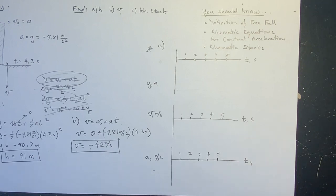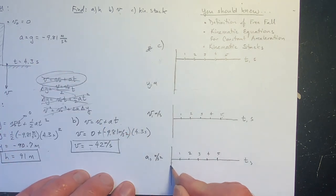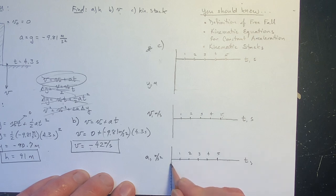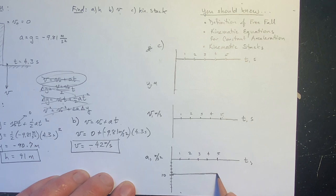The easiest one to draw is the acceleration, because we know it's just the constant acceleration due to Earth's gravity. And we know what that constant is — it's negative 9.81 m/s². I'll scale the axis with increments of 2: 2, 4, 6, 8, 10. Negative 9.8 is right here, and it's negative 9.8 the whole time — a flat horizontal line.